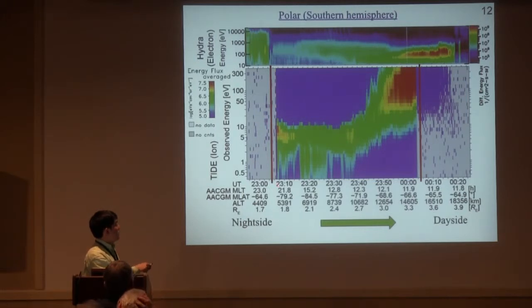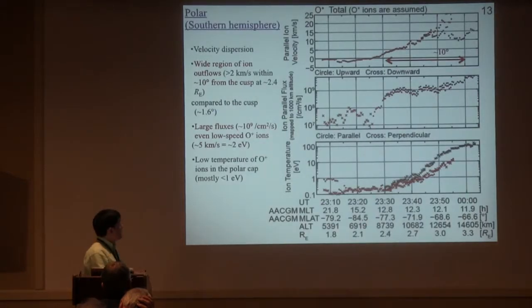Next, we show moments of this period. In this case, the satellite crossed the polar cap from night side to dayside. This is a moment collected using spacecraft motion and spacecraft potential data. The region of ion outflow are wider than the cusp. In this case, only the width of the cusp was about 1.6 degrees, but the outflow region is extended to about 10 degrees.